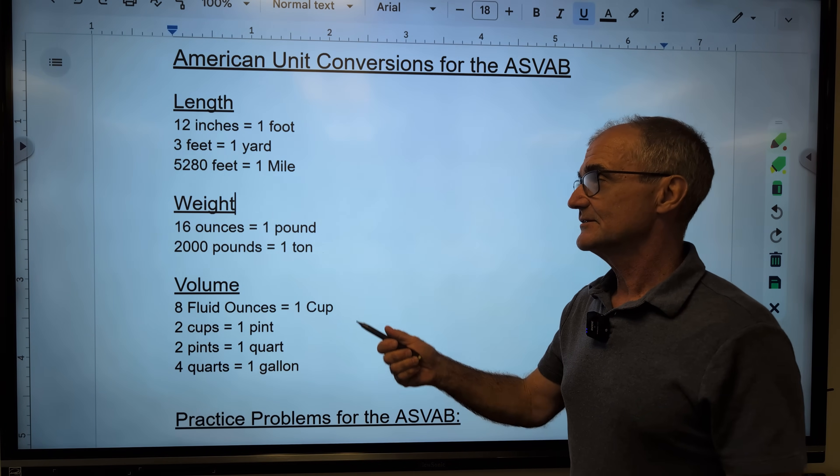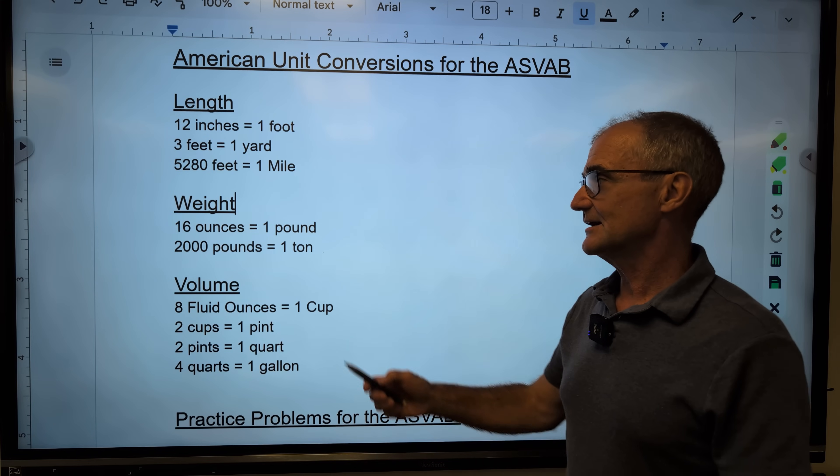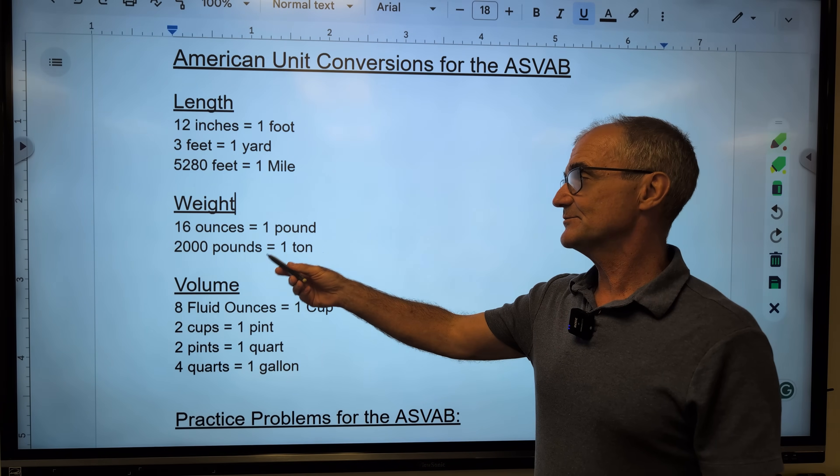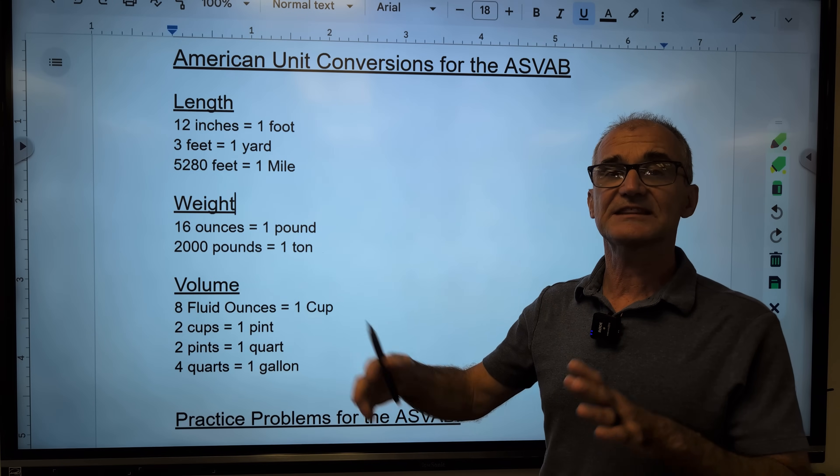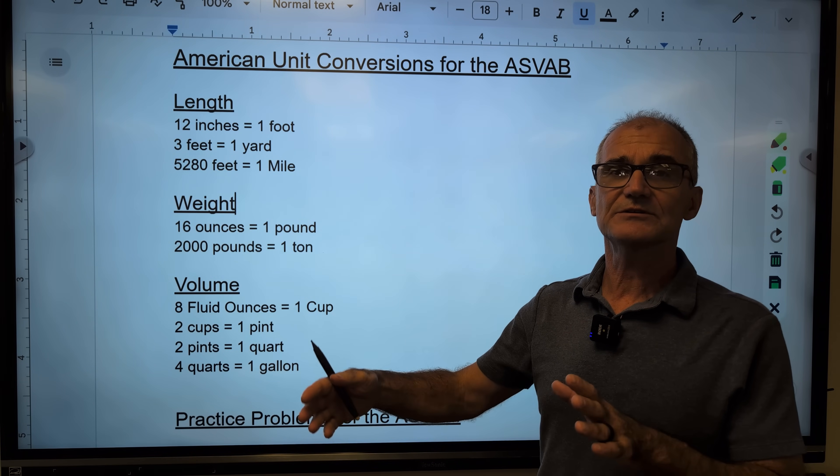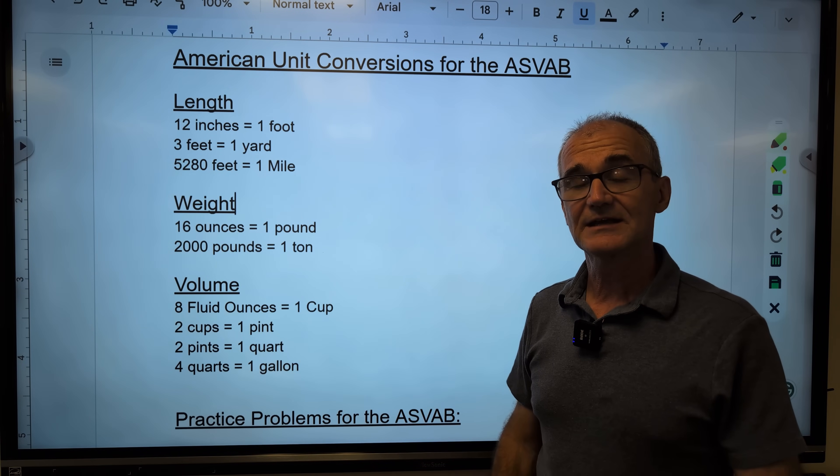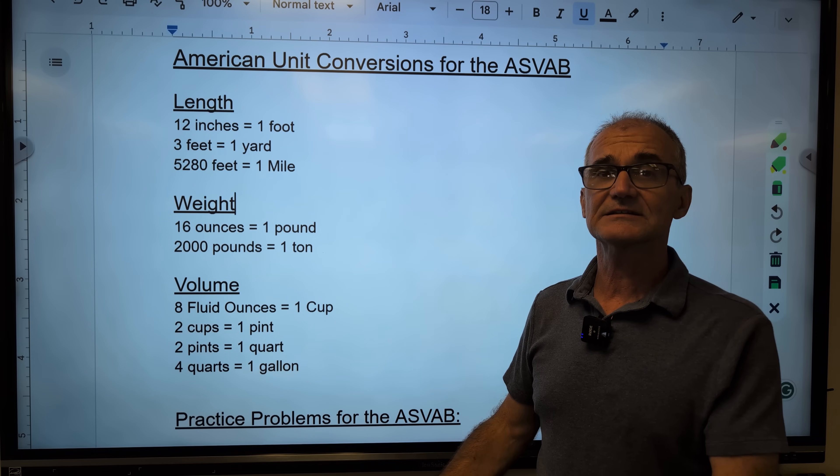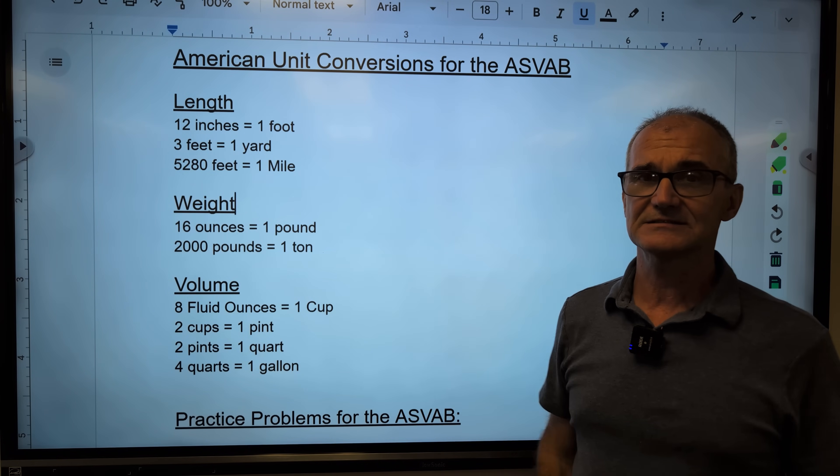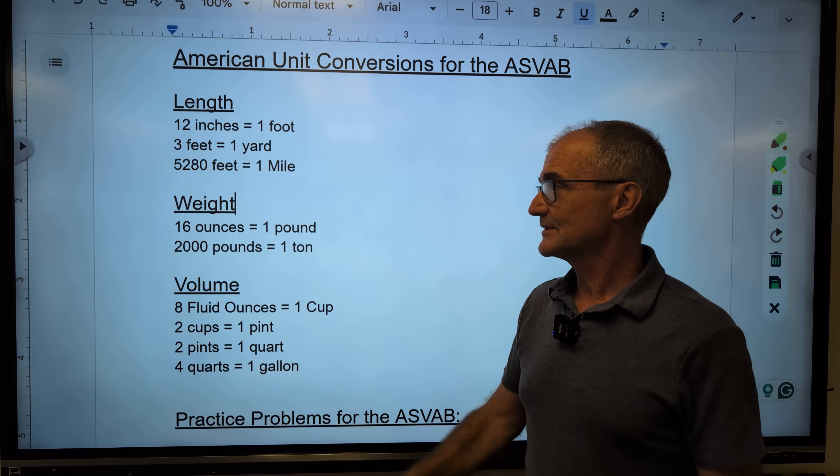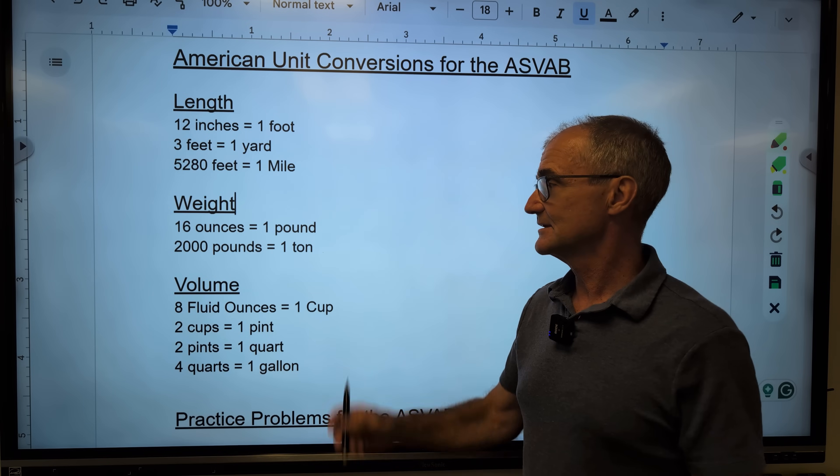And then in weight, there are 16 ounces to the pound. I'm not too sure where that's from. And then there are 2,000 pounds to the ton. This is called the U.S. ton. There is a metric ton that is 1,000 kilograms. There's about 2.2 pounds in a kilogram. So a metric ton is about 2,200 pounds. So it's more than this. And actually in Britain, there's a long ton versus a short ton as well. And it has to do with the differences in gallon sizes and stuff. But we're only looking at the U.S. system. So under weight, again, there are 16 ounces to the pound, 2,000 pounds to the ton.